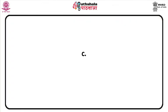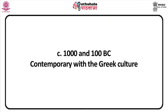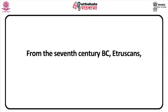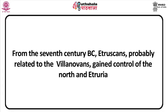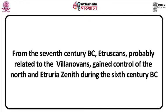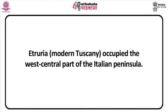The Etruscans lived in Etruria in Italy during the Bronze and the Iron Ages. Etruscan civilization flourished between circa 1000 and 100 BC and was contemporary with the Greek culture. Beginning in the 8th century BCE, Greeks established colonies on the mainland and in Sicily. From the 7th century BCE, Etruscans, probably related to the Villanovans, gained control of the north and Etruria. It reached its zenith during the 6th century BCE when their city-states controlled central Italy.